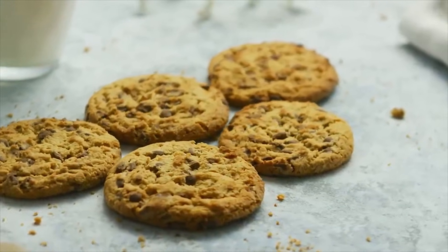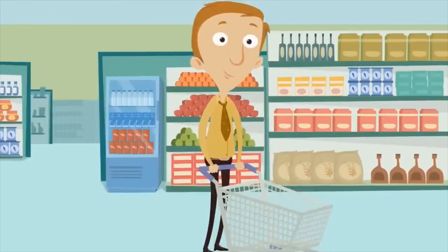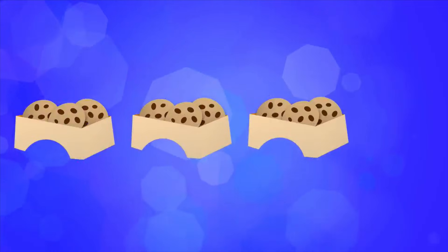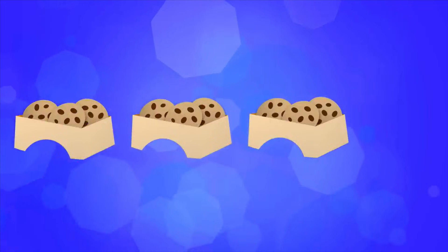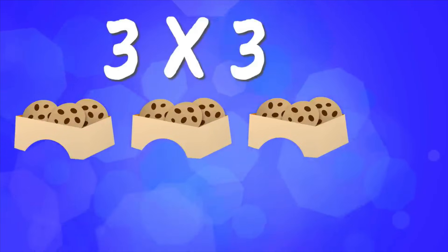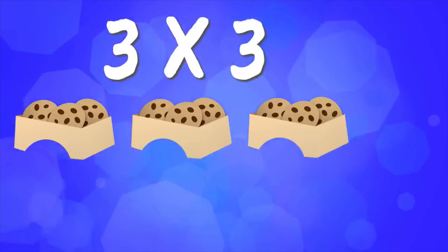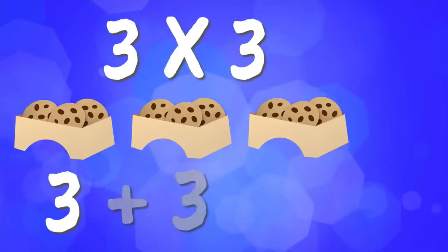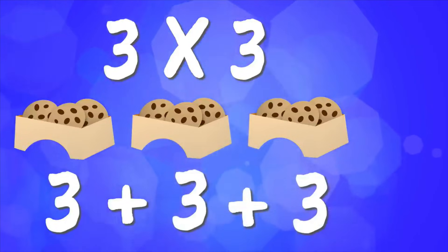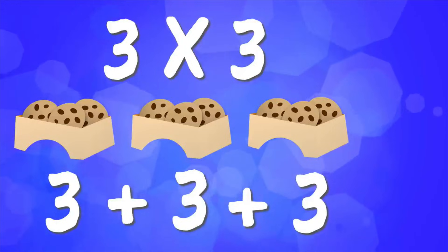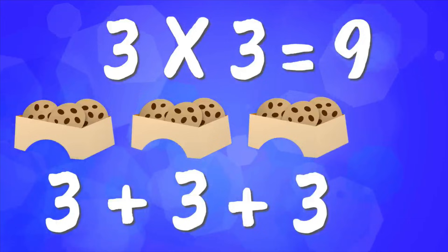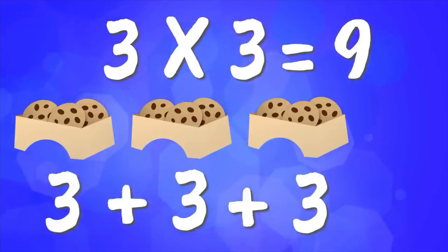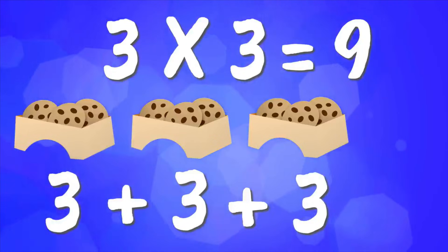Let's practice multiplication with cookies. Let's say a store sells boxes of cookies. There are three cookies in each box, and someone buys three of these boxes of cookies to enjoy with some friends. To figure out how many cookies there are in all, you would multiply the three cookies times three, because there are three boxes. Three times three is the same as three plus three plus three. It's the number three, three times. Three times three equals nine. That means there are nine cookies in all. Three cookies, three times, means there are nine cookies.